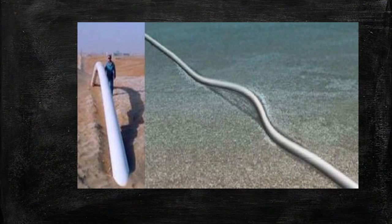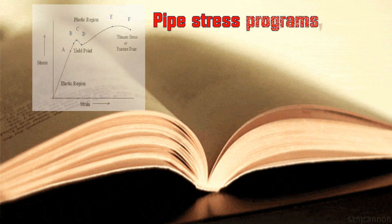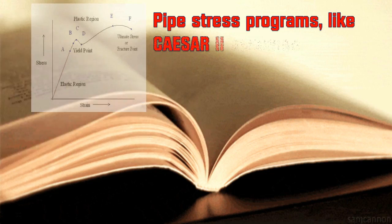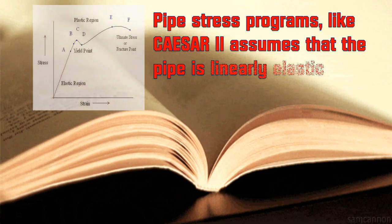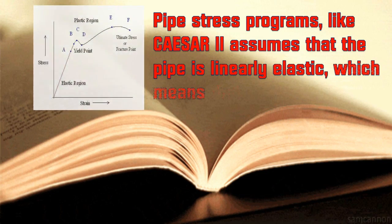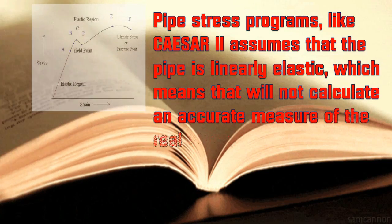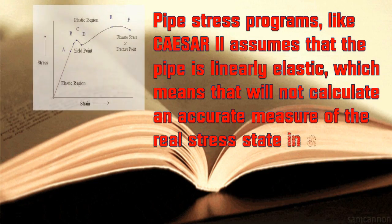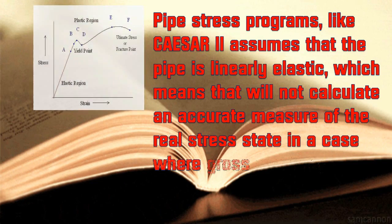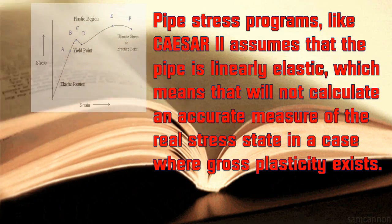Assume this is the piping system for which the failure investigation was being done. Pipe stress programs like Caesar II assume that the pipe is linearly elastic, which means they will not calculate an accurate measure of the real stress state in a case where gross plasticity exists.